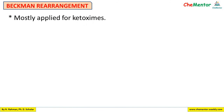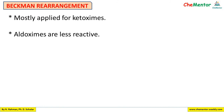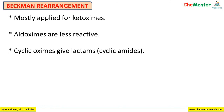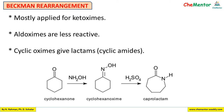Beckmann rearrangement is mostly applied to ketoximes. Aldoximes are less reactive. Cyclic oximes give lactams, which are cyclic amides. For example, cyclohexanone treated with hydroxylamine forms cyclohexanoxime, and treatment with sulfuric acid gives caprolactam.